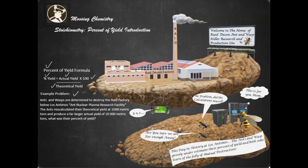The ants miscalculate their theoretical yield at 1,000 metric tons. So that's what they believe they should have got, and produced a far larger actual yield of 10,000 metric tons. What was their percent of yield?